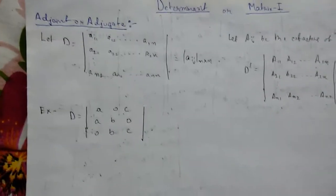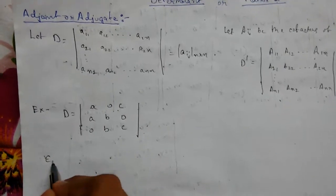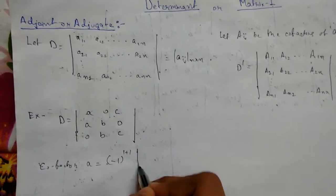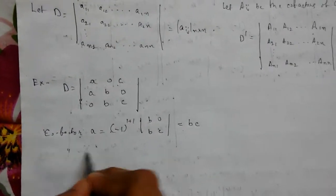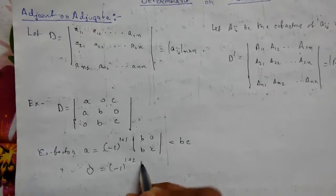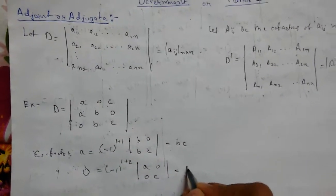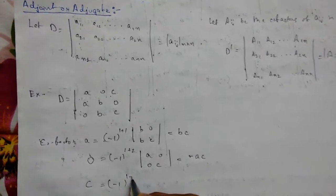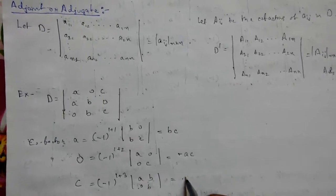We need to find the adjoint of this determinant. First, we find the cofactors of the first row. Cofactor of a: (-1)^(1+1) times |b, 0; b, c| = bc. Cofactor of 0: (-1)^(1+2) times |a, 0; 0, c| = -(ac). Cofactor of c: (-1)^(1+3) times |a, b; 0, b| = ab.